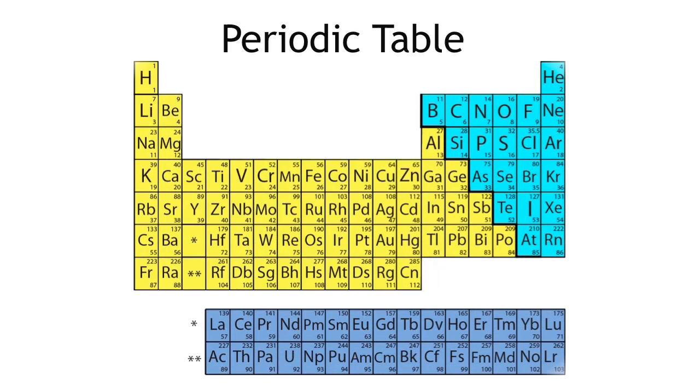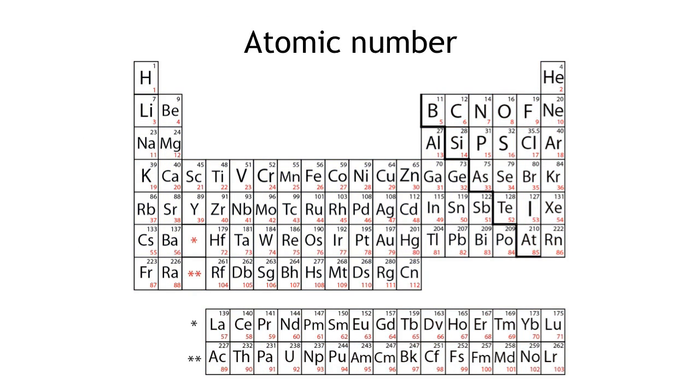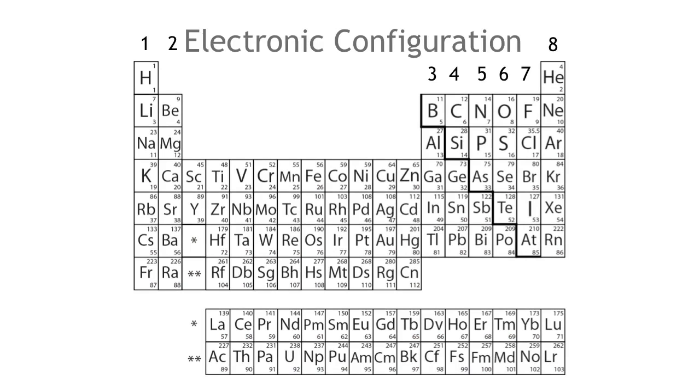The periodic table is a table that organizes the elements by their atomic number, electronic configuration and chemical properties.